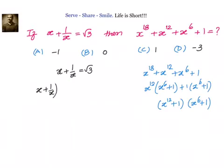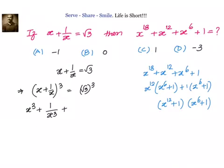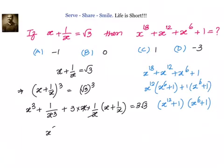What happens if we cube it on both sides? I can write down x plus 1 by x whole cube equal to root 3 whole cube. Using the a plus b whole cube formula: a cube that is x cube, plus b cube that is 1 by x cube, plus 3 into a plus b that is x plus 1 by x, equal to 3 root 3. We will have x cube plus 1 by x cube plus 3 into root 3 equal to 3 root 3.